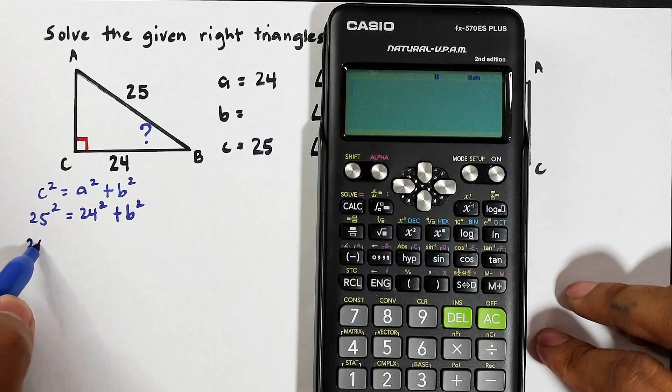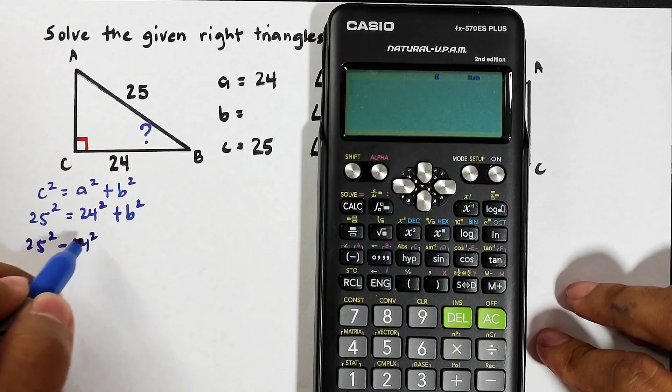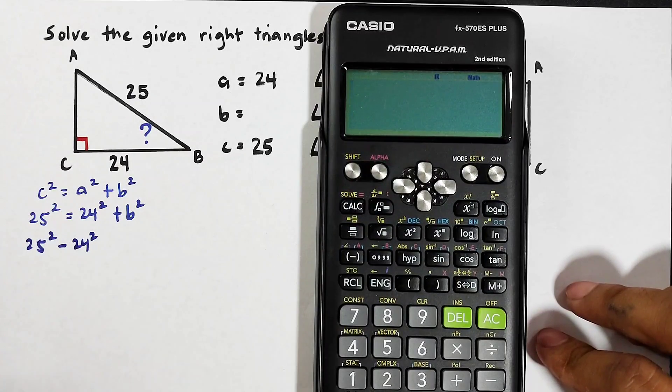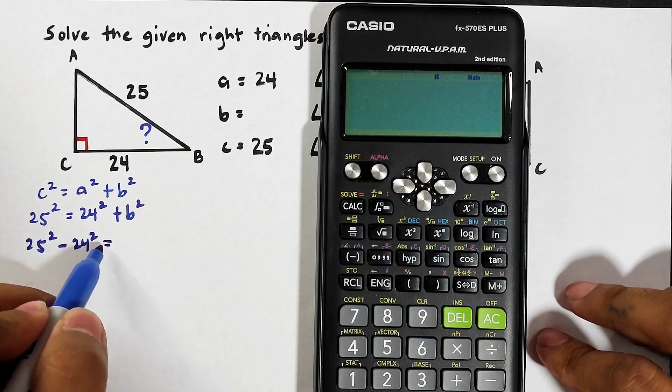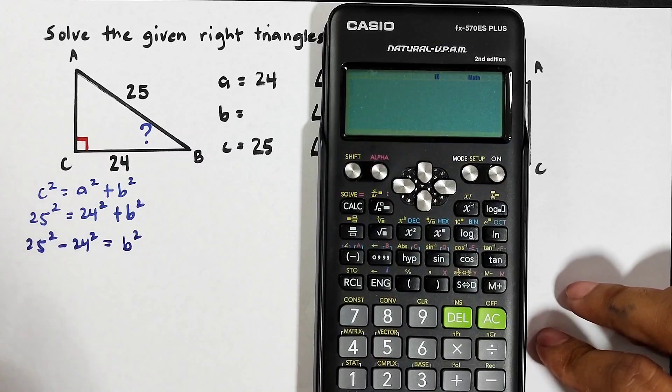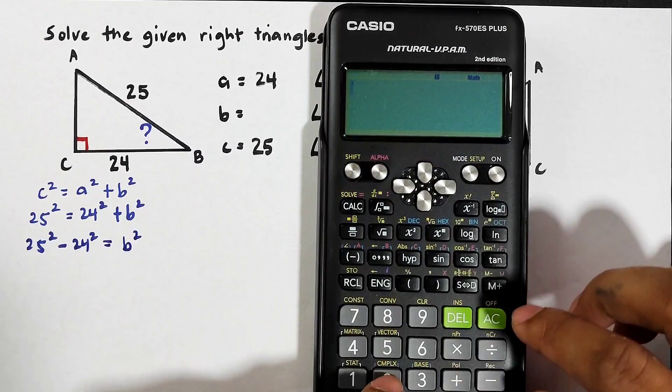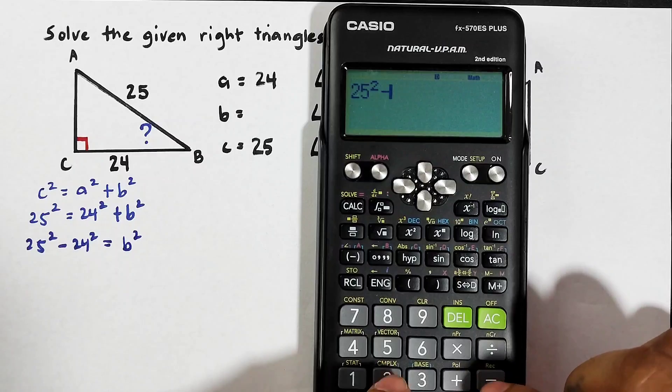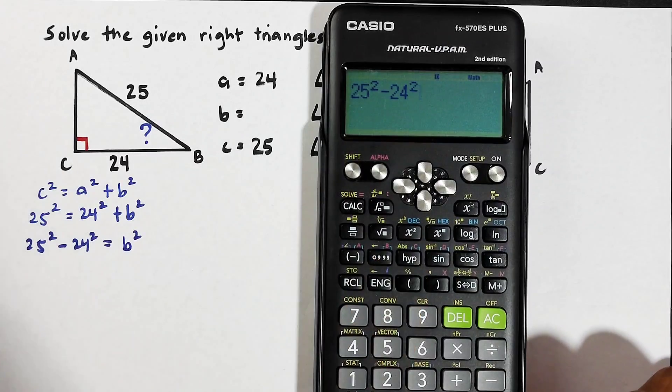25 squared minus 24 squared. I transpose 24 to the other side and that will be equal to b squared. So what we have here is 25 squared minus 24 squared. I'm showing this the quick solution so this is 49.